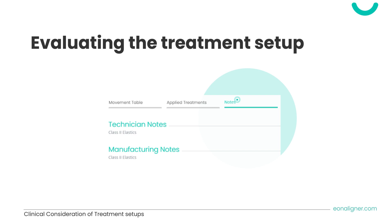Finally, review the technician and manufacturing notes. Here you will find details about any added elastics — type, teeth included, cutouts, and buttons — as well as whether torque enhancers are added, if full fabrication was requested, attachment changes in refinements, or teeth extracted from the setup.